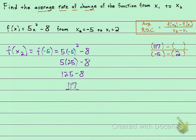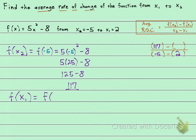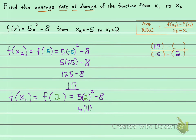Now let's find f of x sub 1. f of x sub 1 corresponds to x equals 2, so we're going to find f of 2. Going to the function, everywhere we see an x we plug in 2: 5x squared minus 8 becomes 5 times 2 squared minus 8. Order of operations: 2 squared is 4, so we have 5 times 4 minus 8. 5 times 4 is 20.